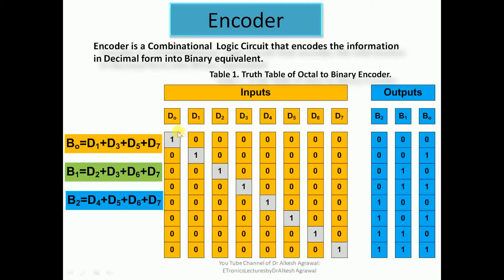For this encoder to work properly, in each row only one input should be high and rest all other inputs must be low. When d0 is high the binary output is 000; when d1 is high it is encoded as 001; when d2 is high it is encoded as 010; when d3 is high it is encoded as 011; when d4 is high it is encoded as 100; when d5 is high it is encoded as 101; when d6 is high it is encoded as 110; and when d7 is high it is encoded as 111.